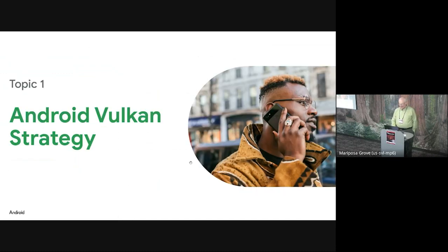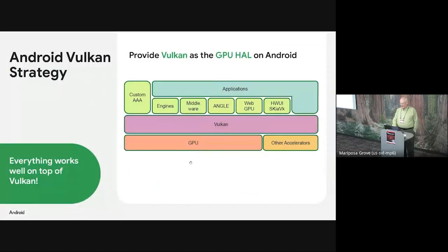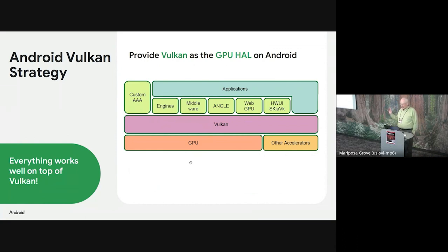I'll give you the highlights. In terms of the Vulkan strategy on Android, we want to have Vulkan everywhere. There are already a few phones that have accomplished this, but we're trying to get that across the ecosystem. There are a few AAA games and apps that will use Vulkan directly, but most are really going to use Vulkan through engines, middleware, or layered APIs such as ANGLE, WebGPU — we had the discussion from Brandon yesterday — and other APIs such as HWui or Skia VK.